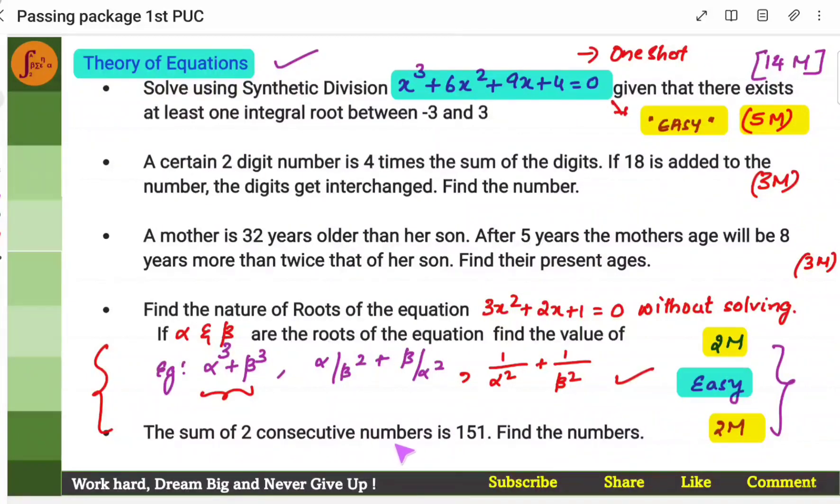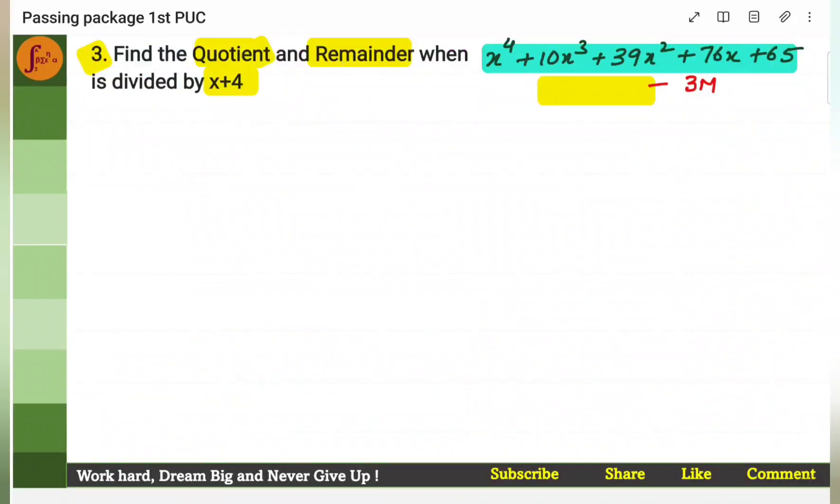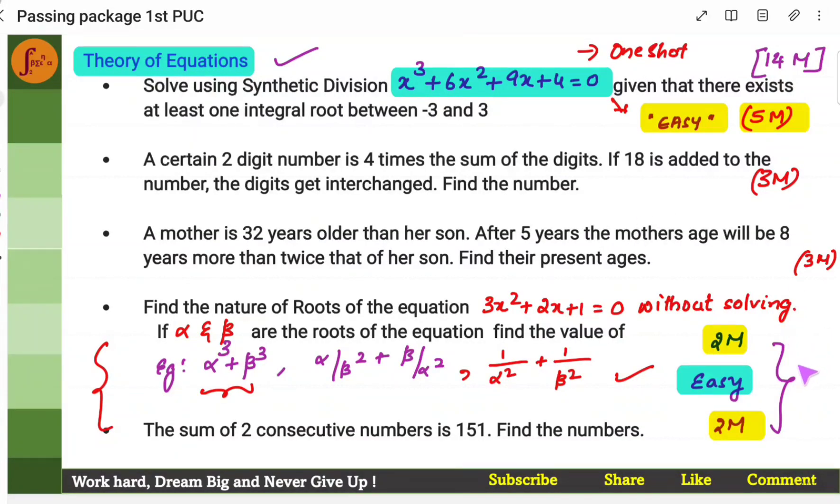This is again a very simple one. The equation is given. You'll have to find the roots of the equation using the relationship formula between the roots and coefficients. We try to practice this well, but this is a very easy one. Again, this one, sum of two consecutive numbers is given. Find the numbers. Yet another problem where you need to find the quotient and remainder when this particular polynomial equation is given, one of the roots is already given, x plus 4. So, you'll have to find the quotient and remainder using synthetic division. These problems are less prone to mistakes.